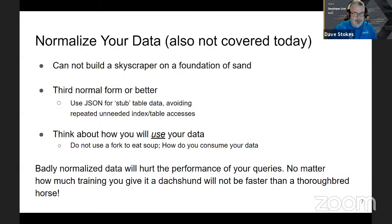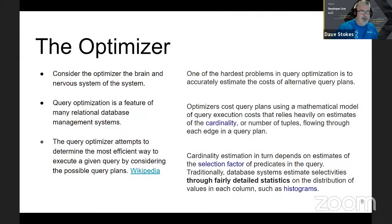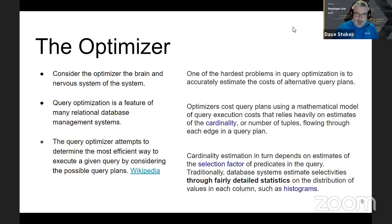Don't use a fork to eat your soup — badly normalized data will hurt the performance of your queries no matter how much you optimize. A dachshund will not be faster than a thoroughbred horse. The optimizer — consider it the brain and nervous system of the database. It wants to look at your query and figure out the fastest, most inexpensive way to get your data. Most optimizers are built on a cost model based on disk reads, because that used to be the slowest thing in the chain.